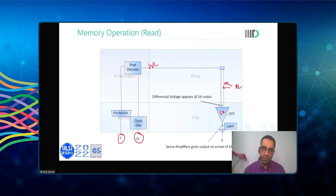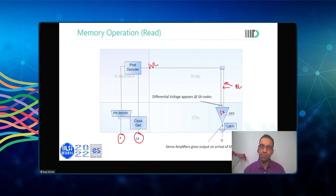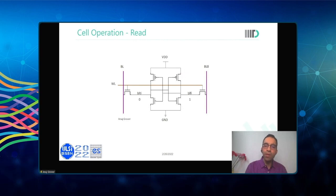SRAMs can have different kinds of memory cells, but the six-transistor memory cell is the most common one. A 6T memory cell is essentially a latch with pull-up PMOSes and pull-down NMOSes, plus a pair of access transistors through which the information inside the memory cell is transmitted onto the bit lines.